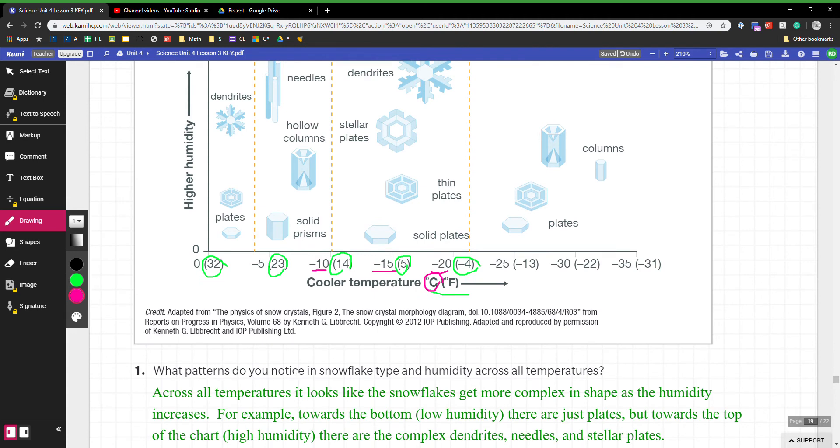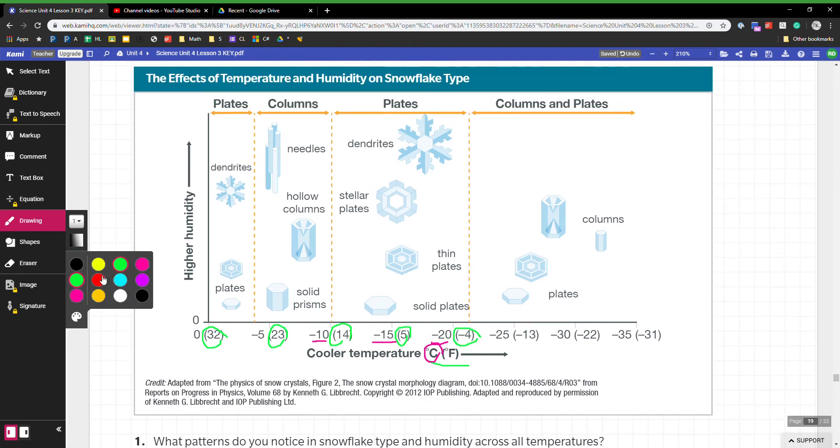Question one says what patterns do you notice in snowflake type across all temperatures? It's not asking us what do we notice when we go from left to right, it's saying if we look at all the temperatures, the whole thing, what patterns do we see? The main thing that I'm noticing is that along the bottom we have all of these kind of plate-shaped snowflakes. They're pretty basic, they're flattish, they seem to make these hexagonal shapes.